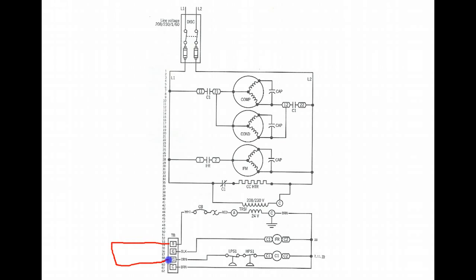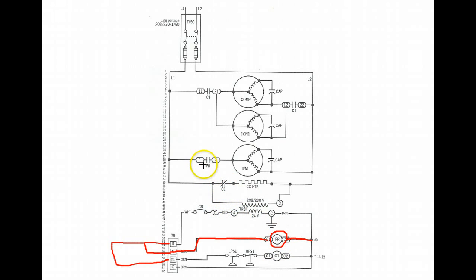That takes care of the 24 volts on the Y terminal. Then we have 24 volts on the G terminal. 24 volts comes through to the indoor fan relay — the solenoid part of the relay that energizes and closes the contacts. We find the IFR contacts up in the high voltage section. Here is the normally open indoor fan relay contact. When power is applied to the relay, that normally open contact closes, applying power to the indoor fan motor so it runs.